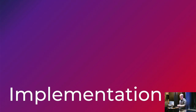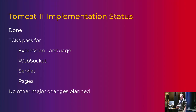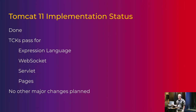That brings us on to Tomcat's implementation. Fundamentally, it is done. We're passing all the TCKs for expression language, pages, and servlet. Those TCKs have all been refactored for Jakarta EE 11 — they're now Arquillian-based JUnit tests, a lot easier for us to interact with and run, and a lot quicker. We have a GitHub project that integrates Tomcat with those TCKs and you can run it yourself.